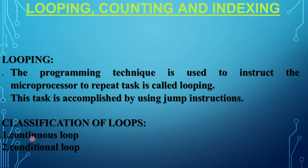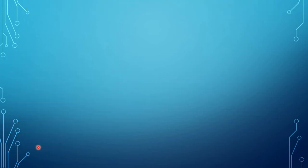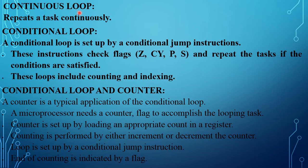A continuous loop repeats a task continuously. A conditional loop is set up by conditional jump instructions. These instructions check flags — that is, the zero flag, carry flag, parity and sign flag — and repeat the task if the conditions are satisfied. The loop includes counting and indexing.